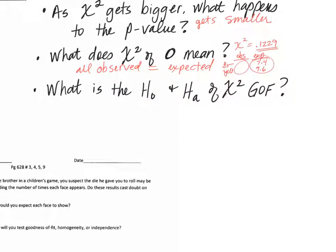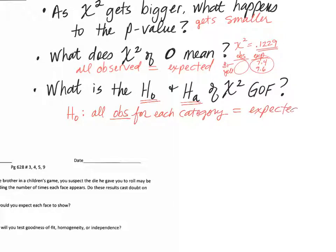Let's talk about what the null hypothesis and the alternative hypothesis would be for a chi-squared test. The null hypothesis would mean that all of the observed values for each category equal what is expected. You could also say chi-squared equals zero, and that is technically correct. But on the AP exam or when we actually run a test, we do them in words — we do not say chi-squared equals zero, even though essentially that's what your null hypothesis is.